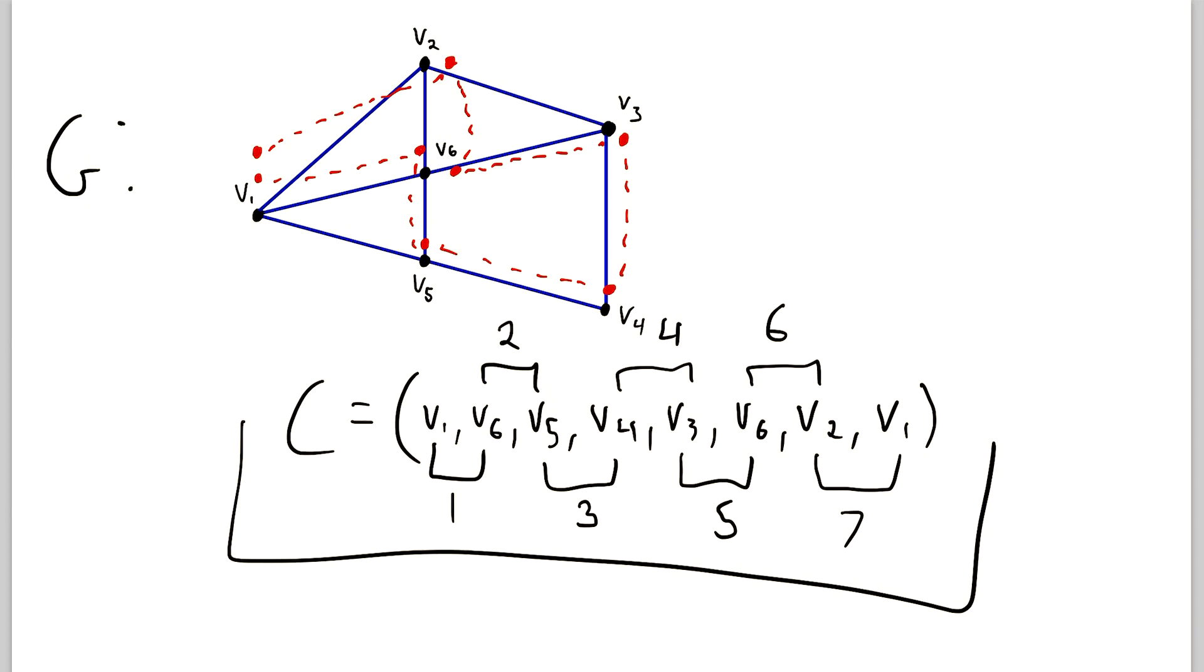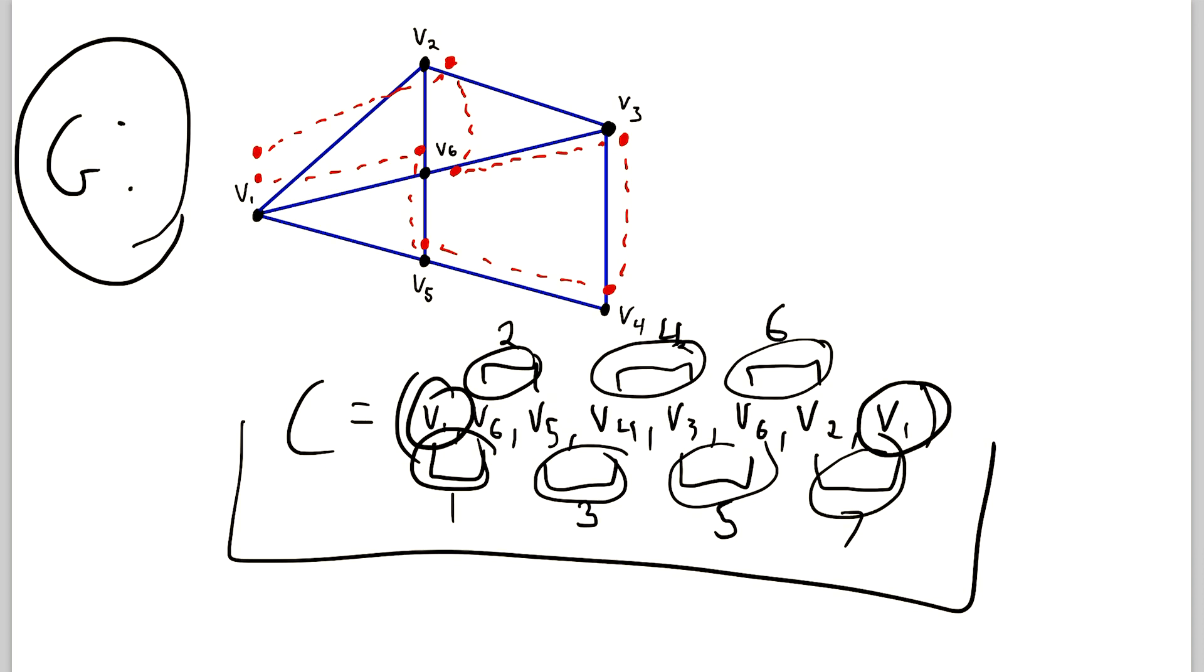It is a sequence of vertices in this graph, such that consecutive vertices are adjacent in the first and the last vertex, V1, V1, the first and last vertex are the same. And then lastly, no edge is encountered more than once.